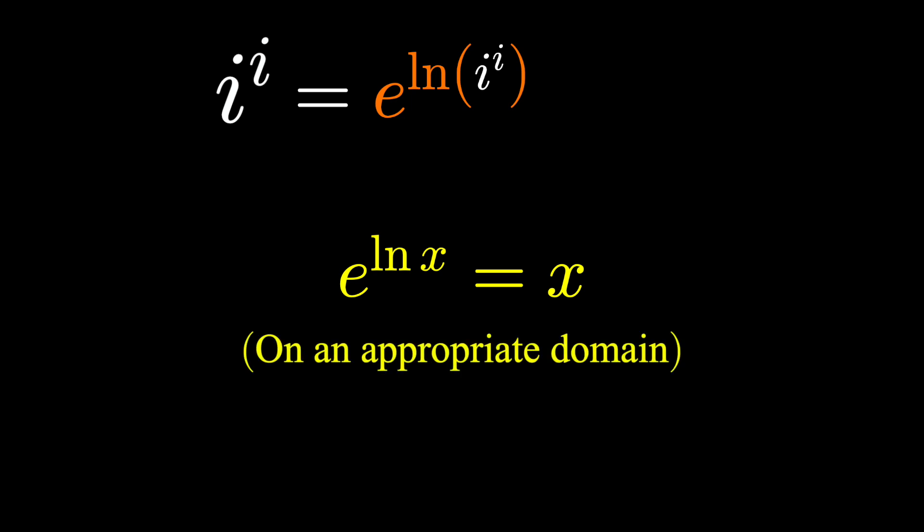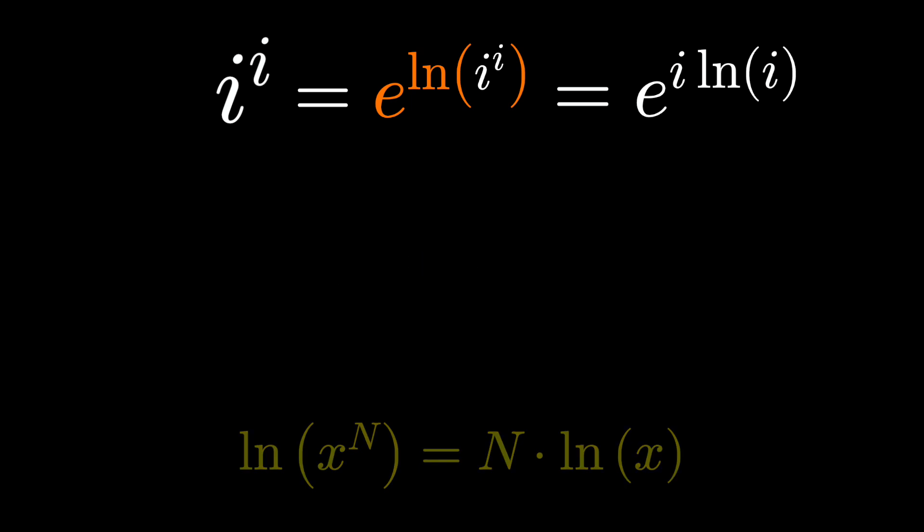To solve exponential type things like i to the i, we often insert an e to the ln. We can do this because the exponential and logarithm functions are inverses, they undo each other. And the reason we do this is because of those properties of logarithms that let us drop down exponents as a coefficient. So e to the i natural log i is a different representation for i to the i, and something we can figure out. We just have to know how to deal with logarithms of complex values.